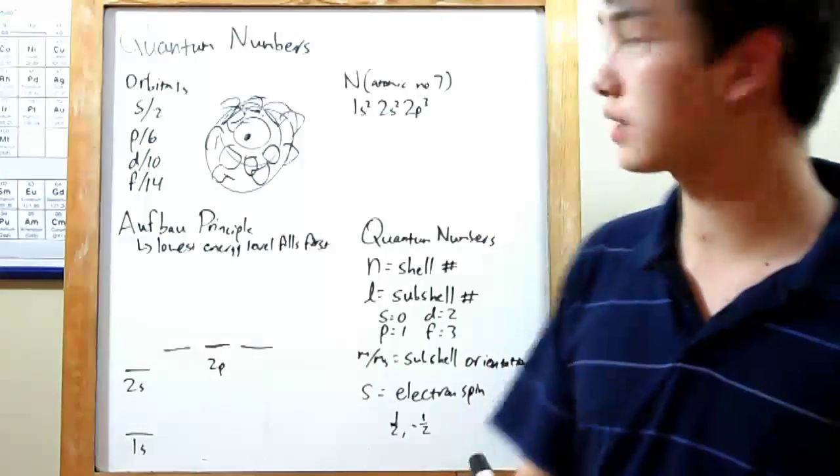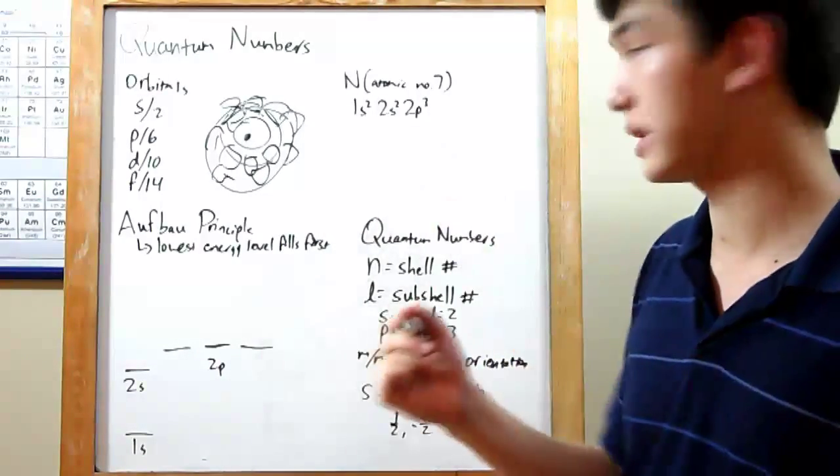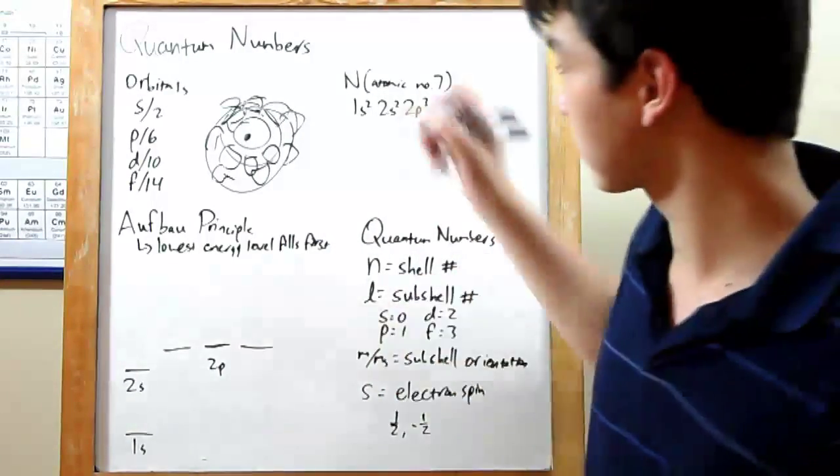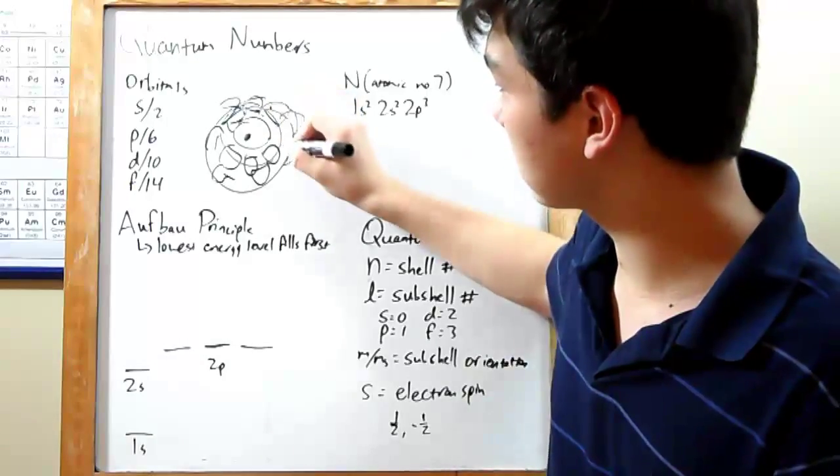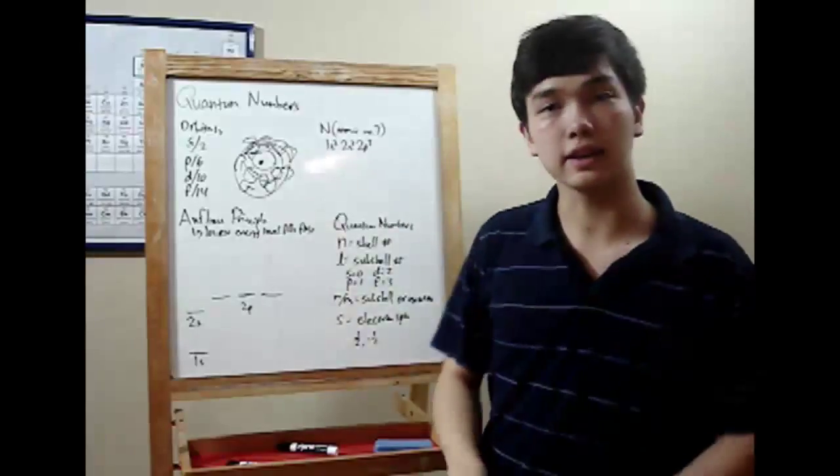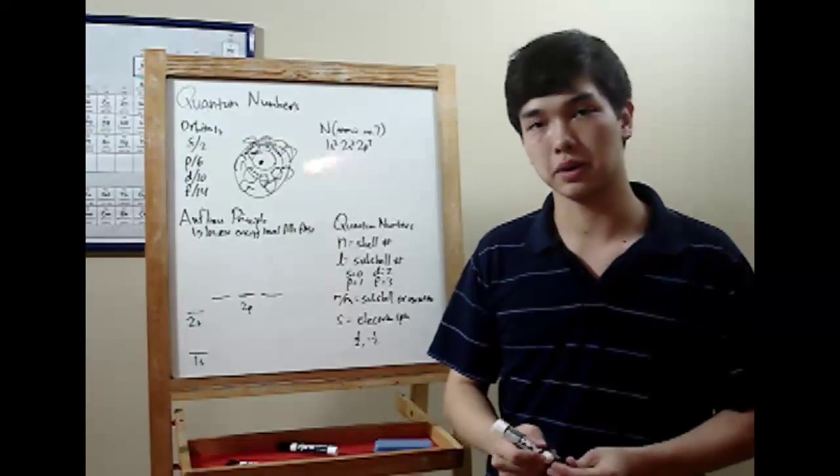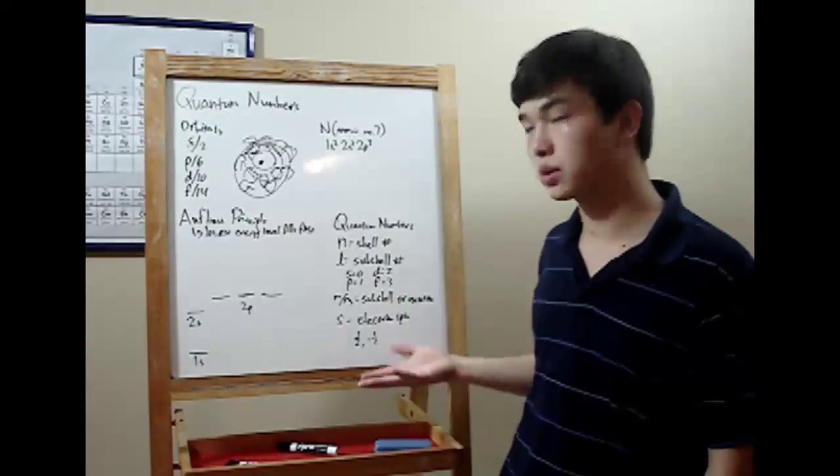Like, if we were trying to write in the electrons for nitrogen over here, 1s2, 2s2, 2p3, it might look something like this. So very hard to tell what exactly you're working with, which is why we've come up with these quantum numbers.